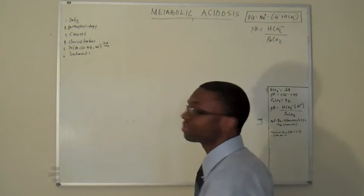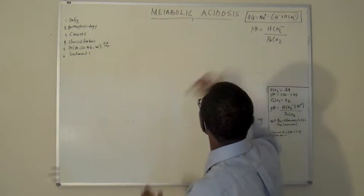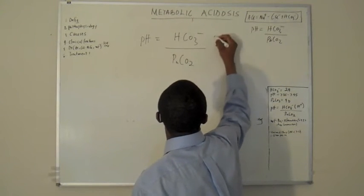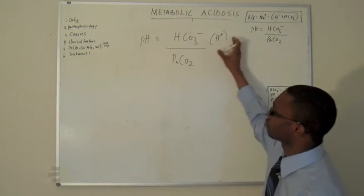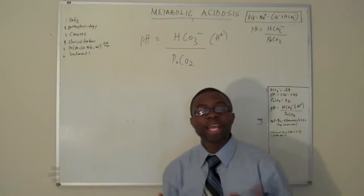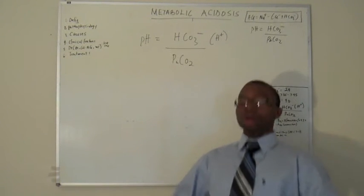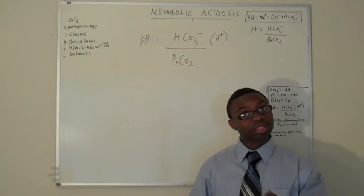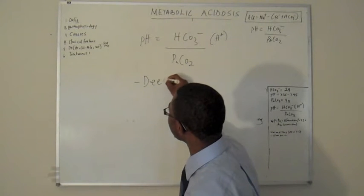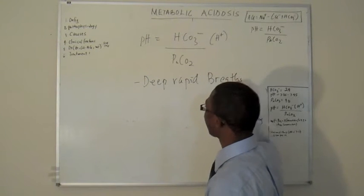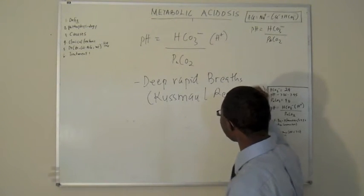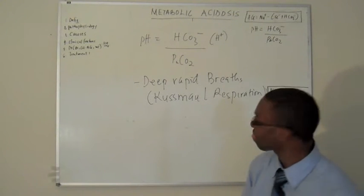It sounds basic, but you will appreciate this formula. If the patient comes in, hydrogen ions are going up and pH is going down — we talked about this at the beginning of the lecture. The person is going to come in and they're taking deep, rapid breaths. They're not wheezing — that's called Kussmaul respiration.